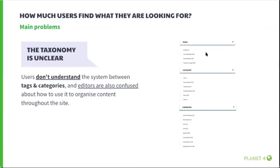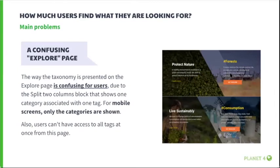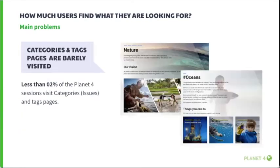We also identified that the taxonomy is unclear — users don't understand the system between tags and categories, and editors are also confused about how to use it to organize content. There is also a confusing Explore page — the way the taxonomy is presented is confusing for users, probably due to the split two-column block that shows one category associated with one tag. On mobile screens, only categories are shown and users cannot access all tags from this page. Categories and tag pages are barely visited — less than two percent of Planet 4 sessions visit these pages.